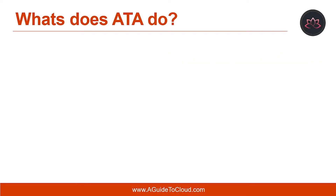So what does ATA do? ATA technology detects multiple types of suspicious activity focusing on several phases of the cyber attack kill chain, including reconnaissance, lateral movement cycle, and domain dominance. In reconnaissance, attackers gather information on how the environment is built, what the different assets are, and which entities exist. They generally build their plan for the next phases of the attack.